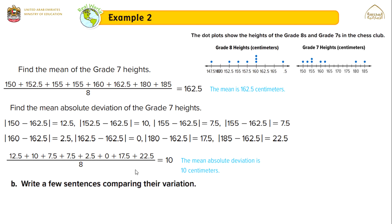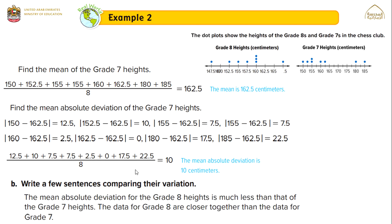Write a few sentences comparing their variation. The mean absolute deviation for grade 8 heights is much less than for grade 7 heights. The data for grade 8 are closer together than the data for grade 7.